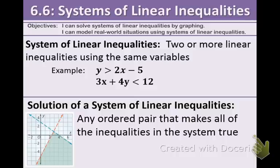You can see an example right here, and this matches up with the graph shown below. A solution of a system of linear inequalities is any ordered pair that makes all of the inequalities in the system true. The solutions are in the shaded area — wherever the two shaded areas overlap, that's where all of the solutions are.